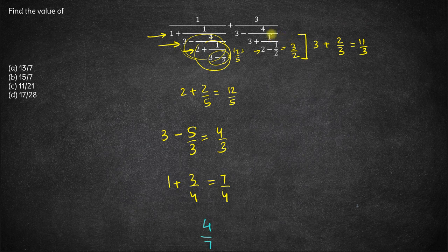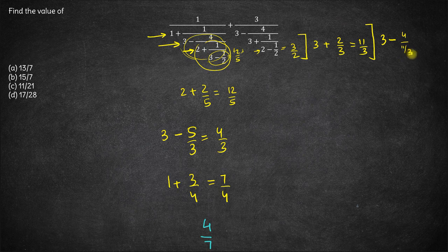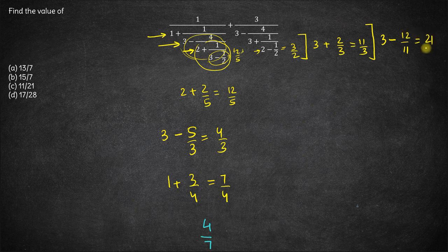Now we have 4 upon 11/3. So solving this whole part, we have 3 minus 4 upon 11/3. This 3 goes and gets multiplied, so this becomes 12/11. So 3 minus 12/11: 3 into 11 is 33, and 33 minus 12 is 21/11. So this whole thing comes out to be 21/11.